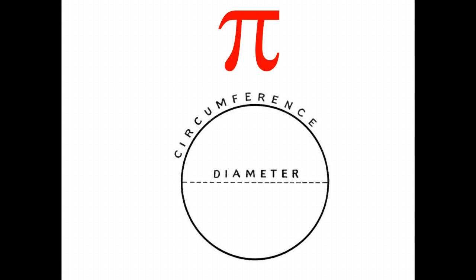Before we go ahead and find the perimeter of circles, let's have a look at a very special number called pi.